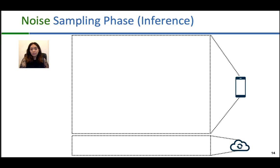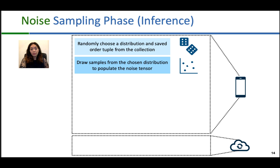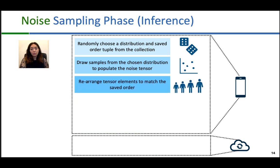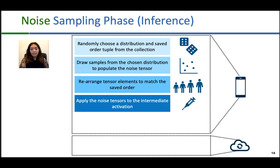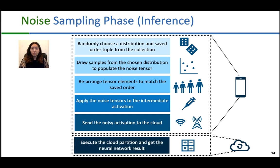Once the training has finished and the collection of noise distributions is gathered, we can run inference on a deployed system. First, we randomly choose a distribution and a saved order tuple from the collection, draw samples from the distribution and populate the noise tensor, then rearrange the tensor elements to match the saved order. We then apply the noise tensor by adding it to the intermediate activations generated from the first partition of the neural network on the edge device. The noisy activations are then sent from the edge device to the cloud, and the cloud executes the rest of the neural network and returns the result.